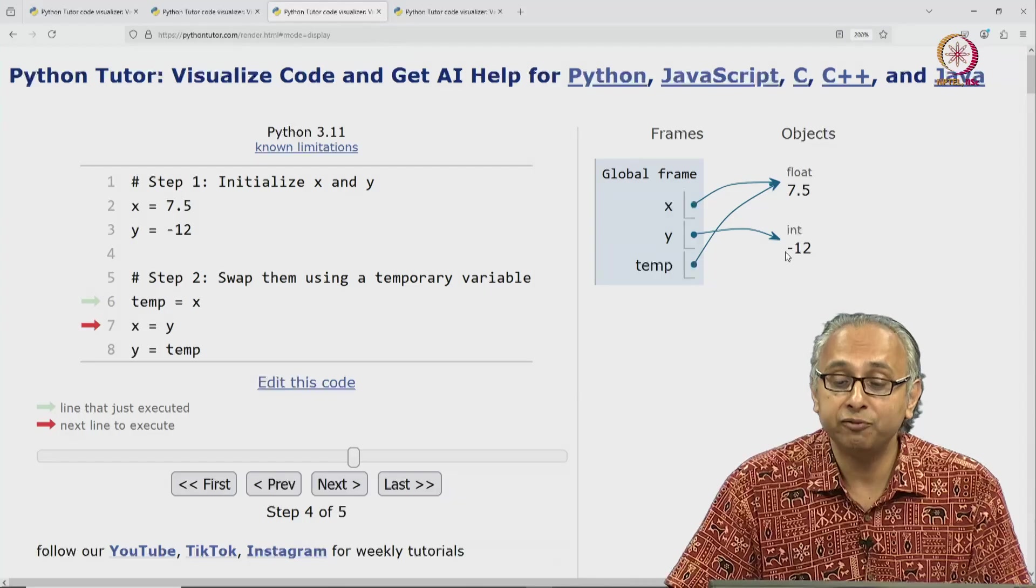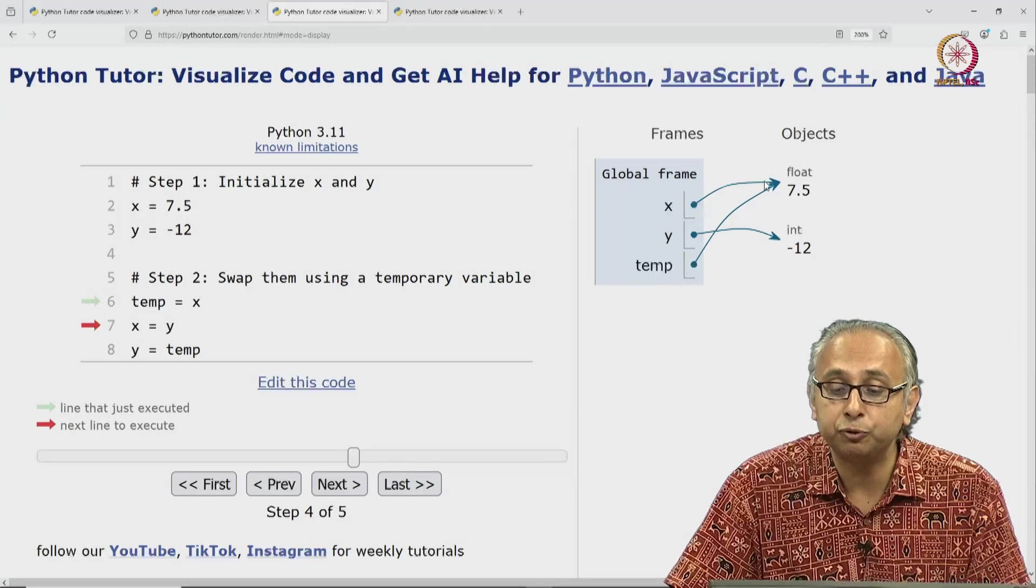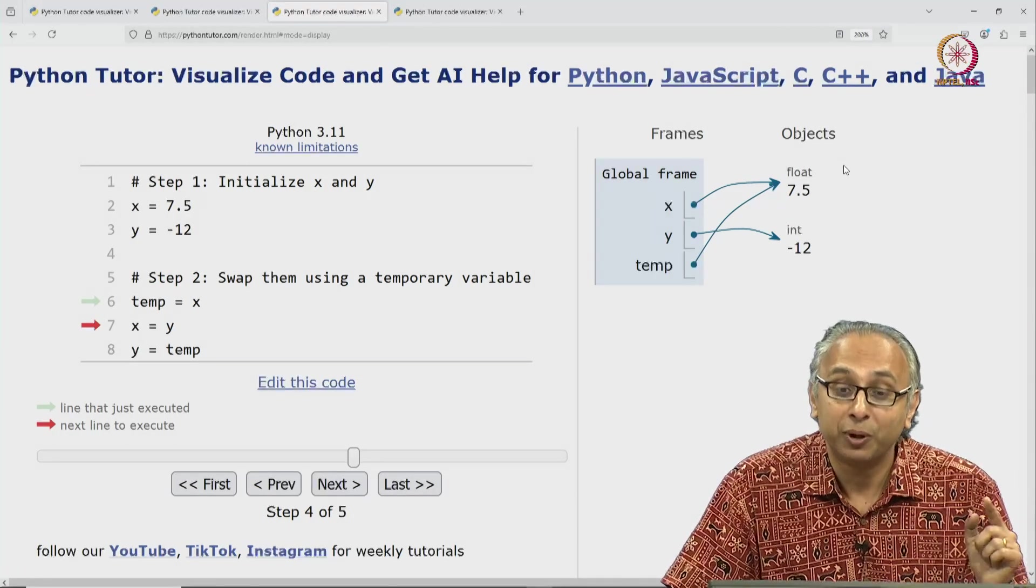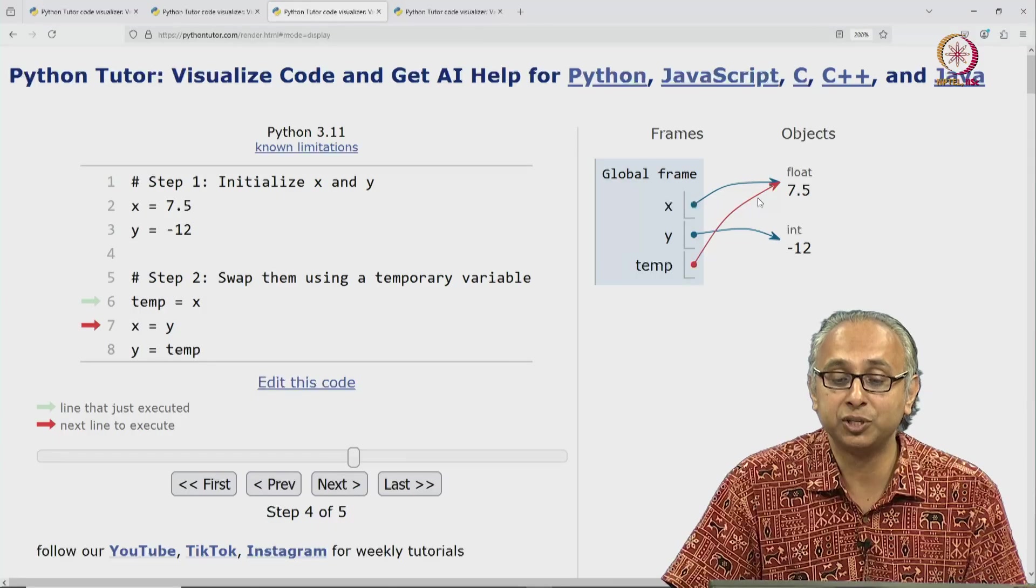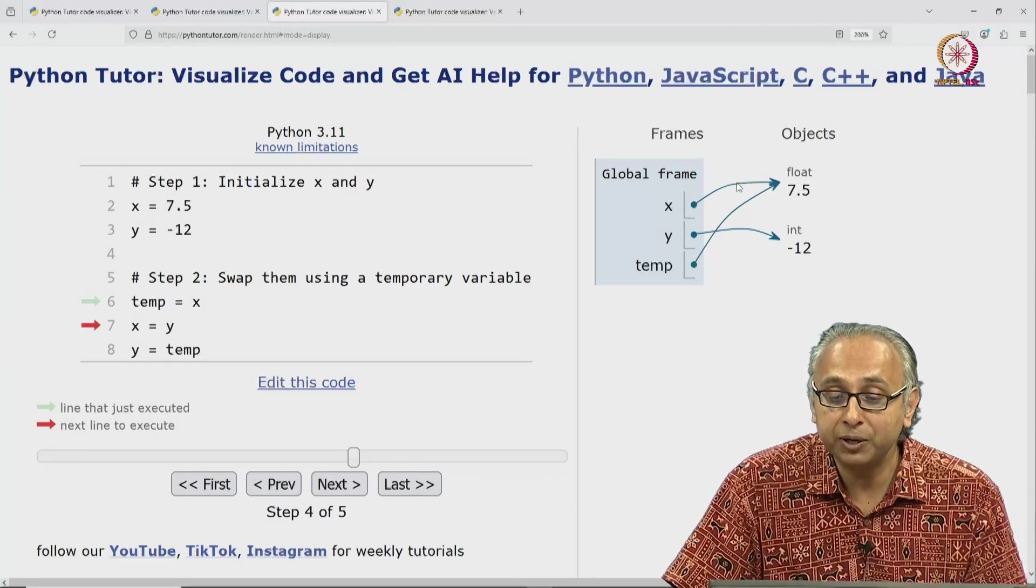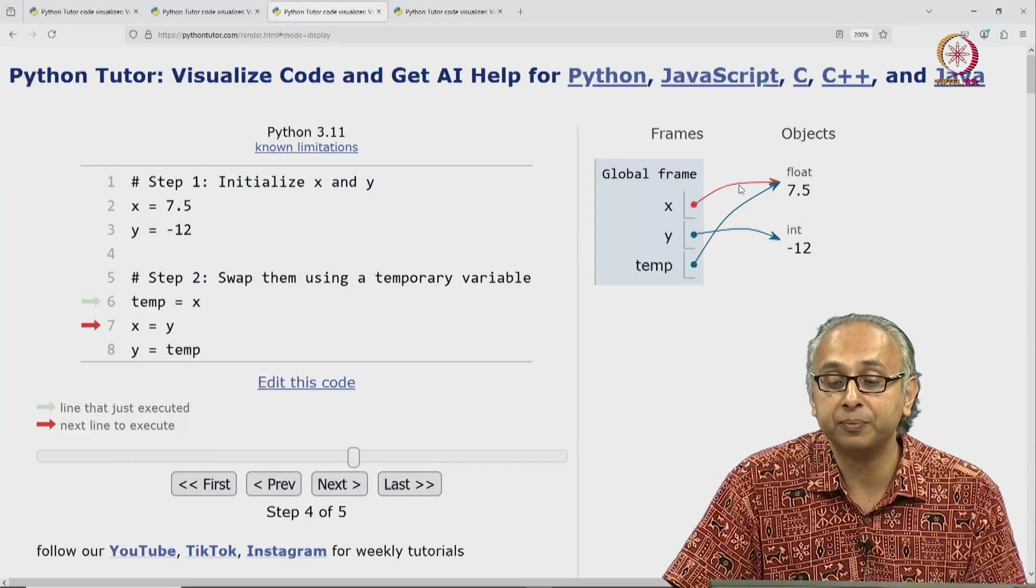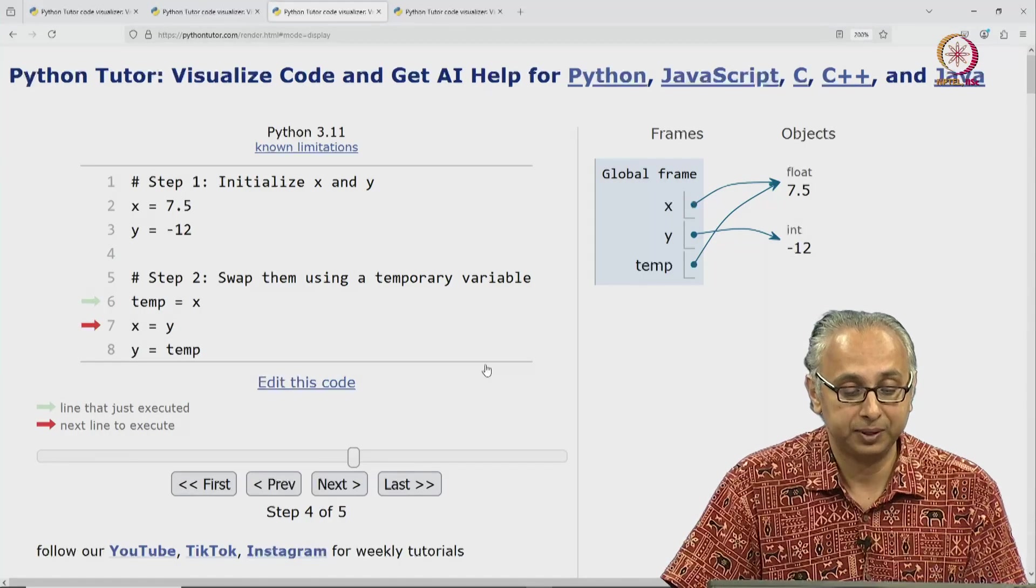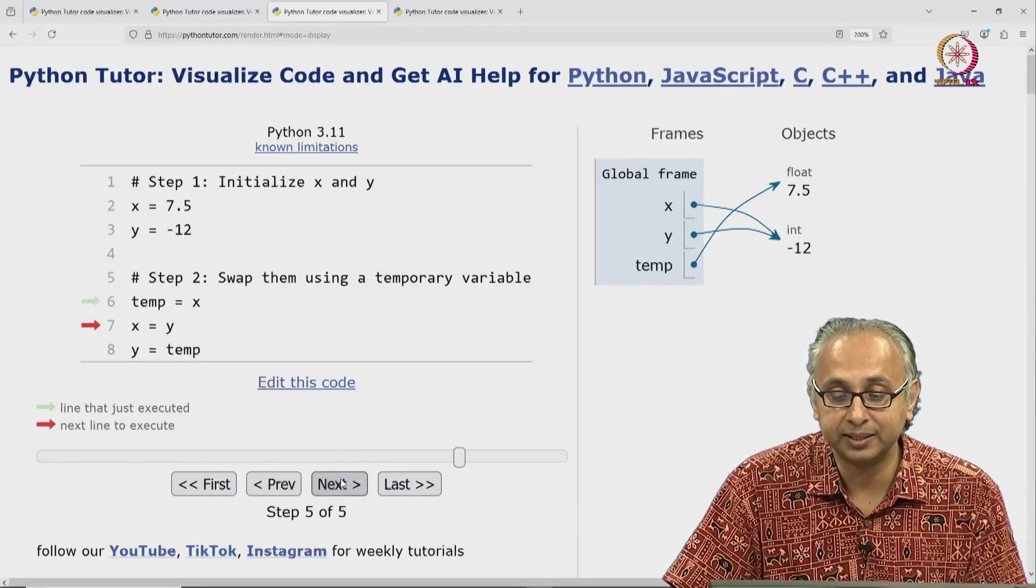Because no other variable was referring to this float object. Well, this time we have temp which is referring to that object. So we're not going to lose it. We're simply going to move this label from the float to the int. When we click on next, you see that's exactly what happens.